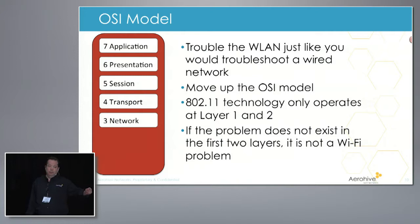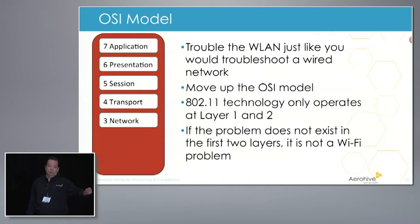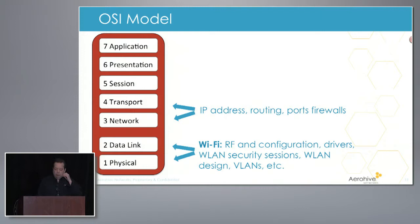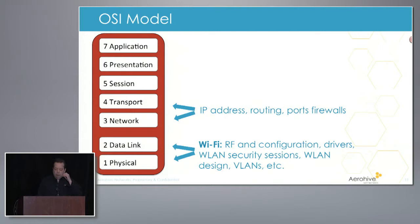Layer one and layer two are Wi-Fi problems specifically. Layer one: you're going to have your RF problems, configuration issues, wireless LAN security sessions, and drivers — which are one of the biggest problems we have in this industry. As you start moving up to layer two, it might be association and authentication problems and VLANs. As you move up into the higher layers and outside of Wi-Fi problems, you're talking about IP addresses, routing, ports and firewalls at layer four, then up toward the application layer.